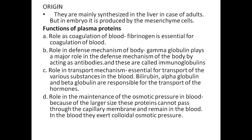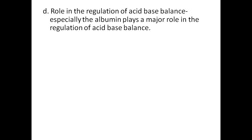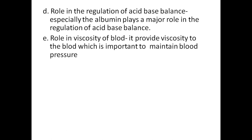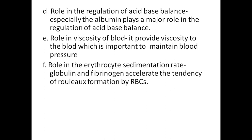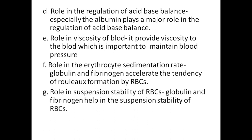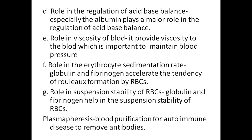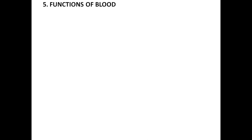Proteins remaining in blood exert colloid osmotic pressure. Albumin plays a major role in regulation of acid-base balance. Plasma proteins provide viscosity to the blood, which is important to maintain blood pressure. Globulin and fibrinogen have a tendency to promote rouleaux formation by RBCs. Globulin and fibrinogen also help in suspension stability of RBCs. Plasma pheresis — blood purification — is used for autoimmune disease to remove antibodies.